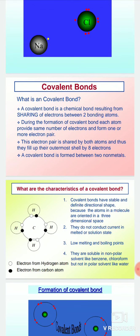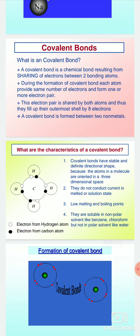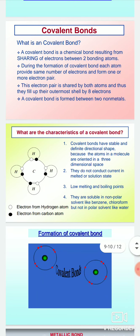What are the characteristics of covalent bonds? Covalent bonds have low melting and boiling points. They are soluble in non-polar solvents like benzene and chloroform, but not in polar solvents like water.